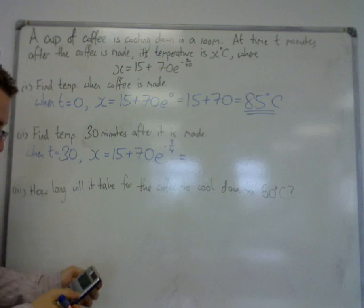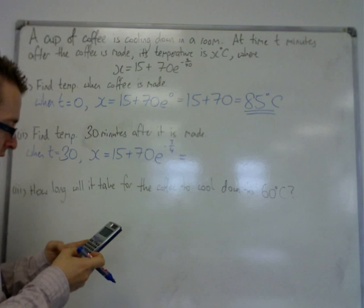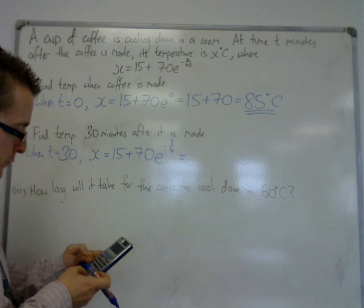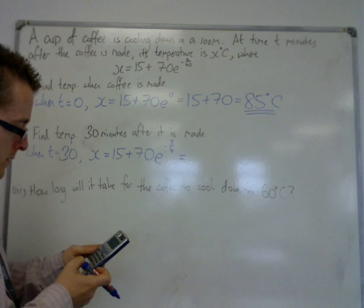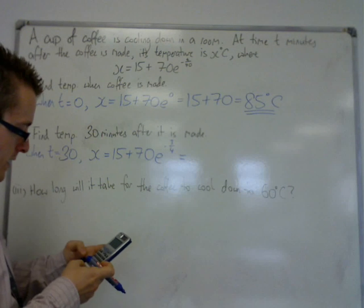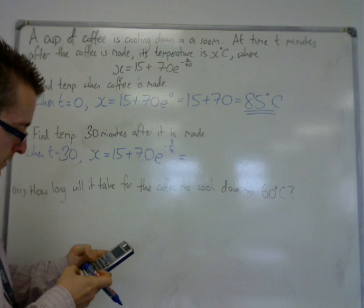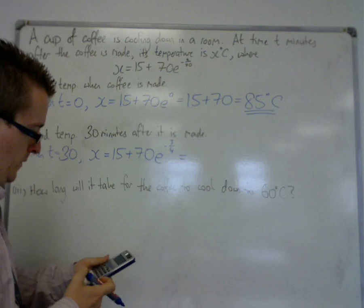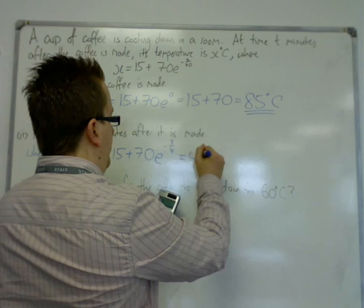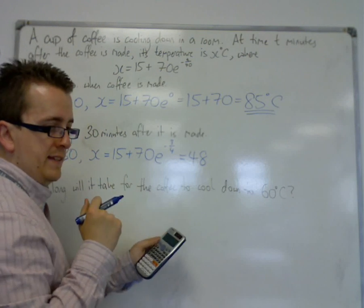What we do is plug that into the calculator directly: 15 plus 70 times e to the minus three quarters. We get 48.0656, etc.